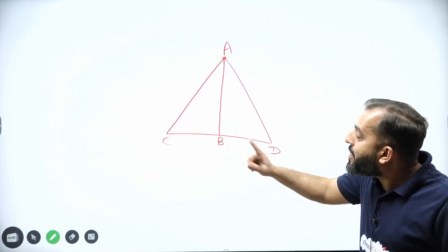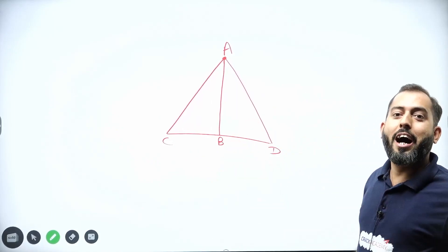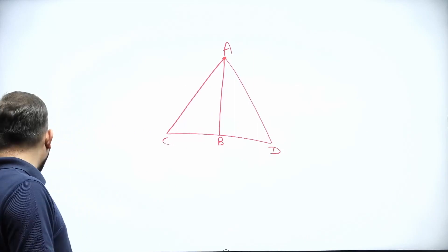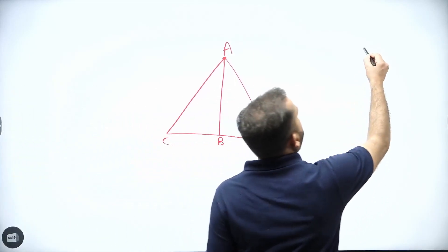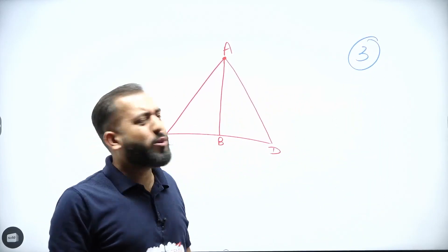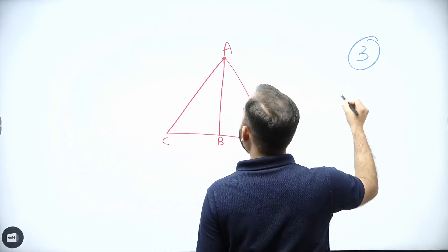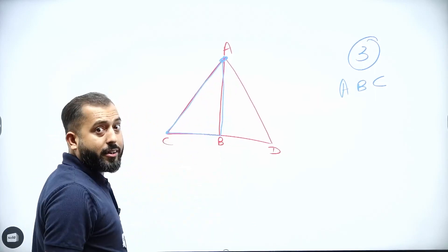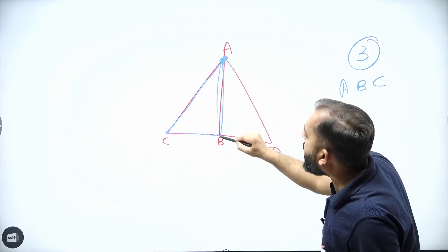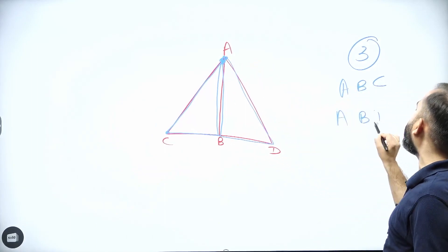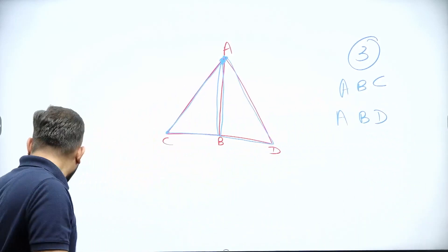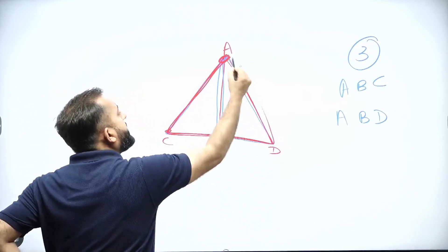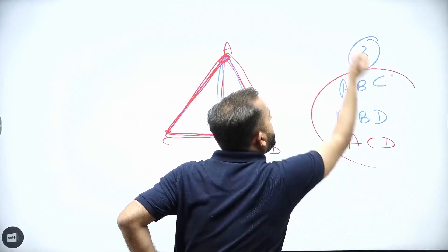The actual question the examiner is going to ask you is: how many triangles are there in this figure? Some of you will say three triangles. How come? One triangle is ABC, another is ABD, and the third one is ACD. So in this figure, there are three triangles.